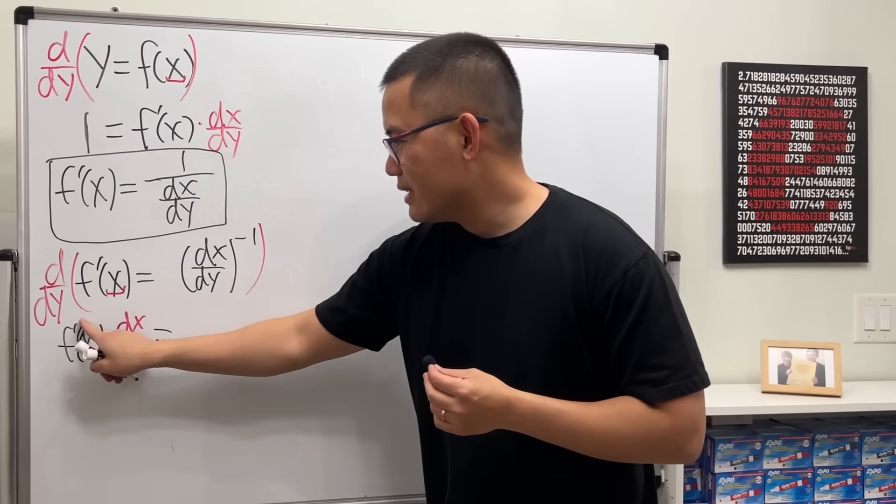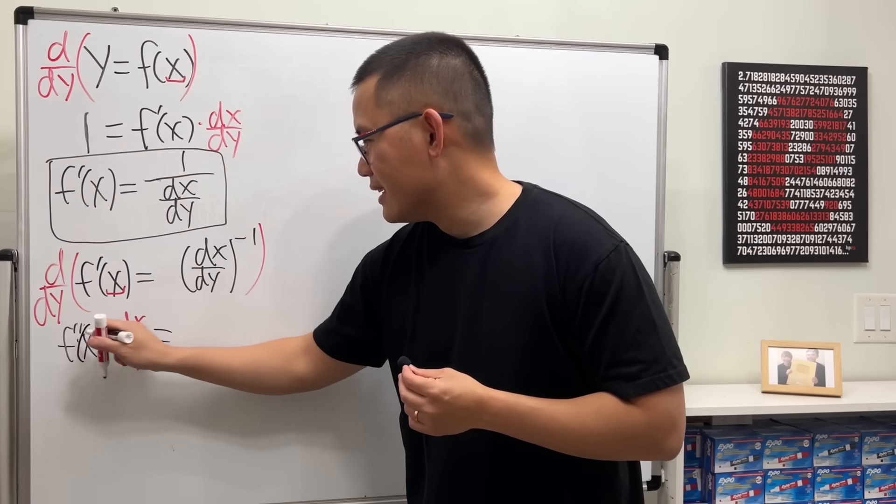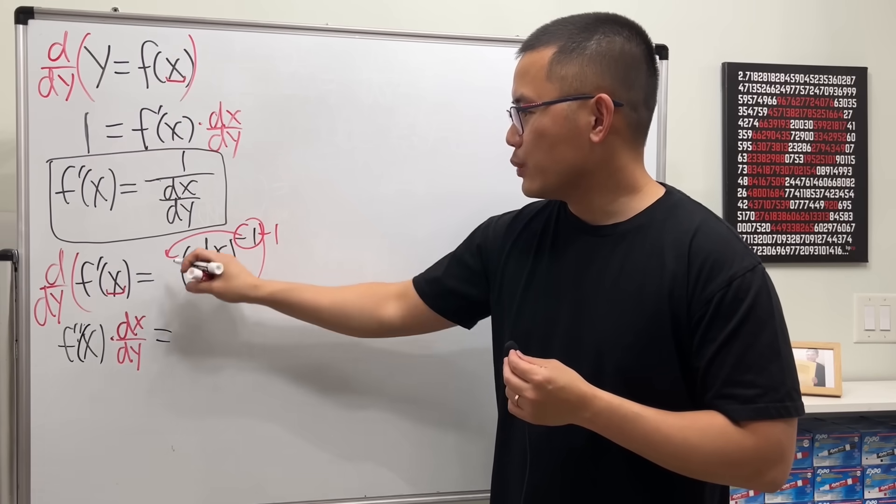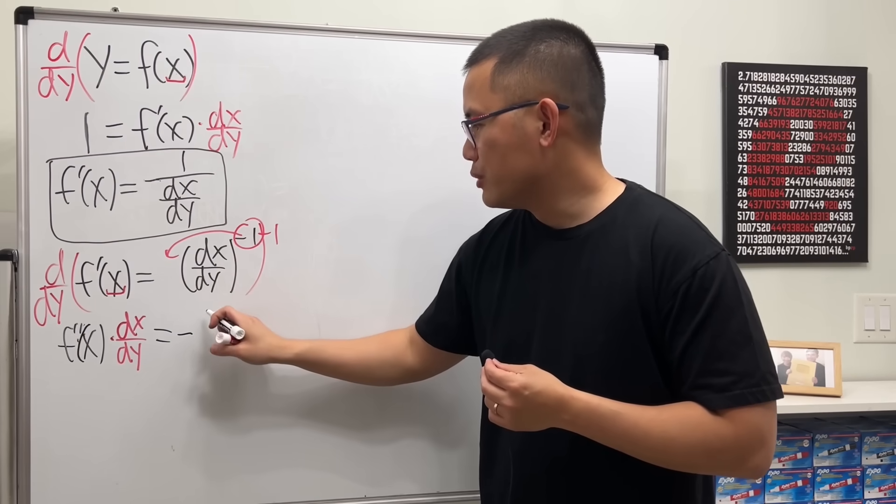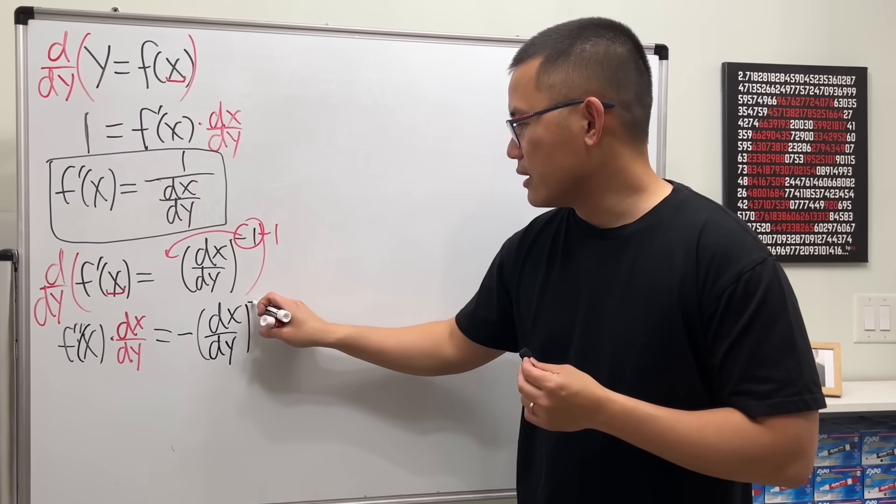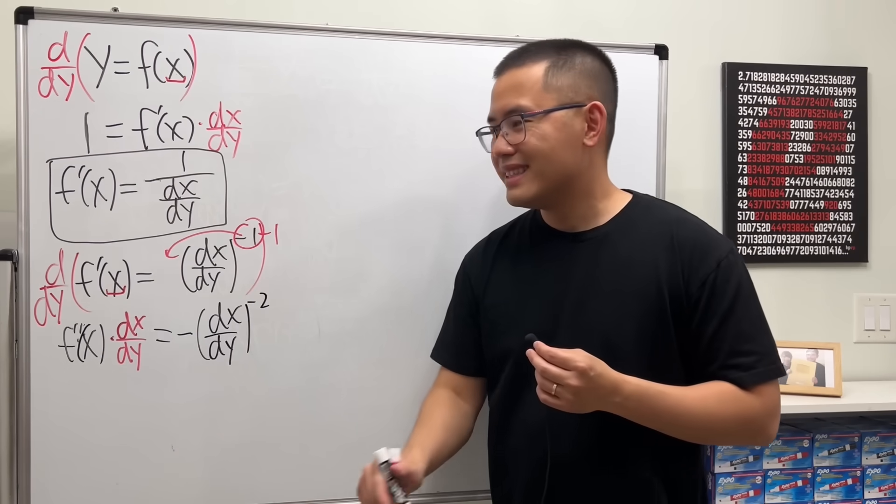And then on the right-hand side here, put the power to the front, and then minus one, so we get negative, the input states, and then this is raised to the negative two.